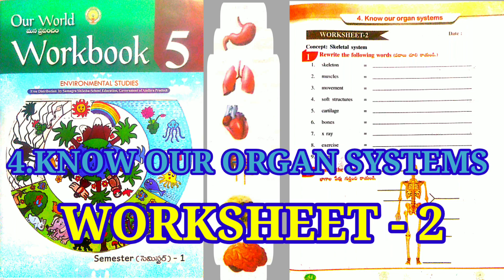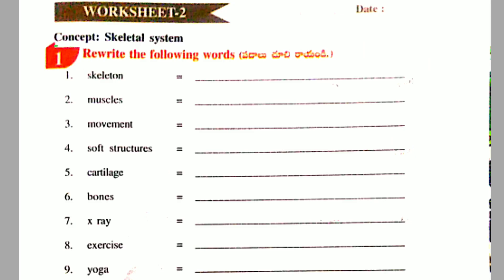Welcome to Sri Veena Videos. Our World, 5th class, Chapter 4: Know Our Organ Systems. Worksheet No. 2 Concept - Skeletal System, First activity.